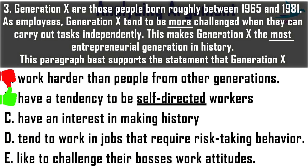Option C: 'Generation X have an interest in making history.' This is an out-of-the-box, heroic statement that does not match any information the paragraph wants to emphasize. Option D: 'Generation X tend to work in jobs that require risk-taking behavior.' Though risk-taking supports an entrepreneurial mindset, it is not as strong as the phrase 'self-directed,' so it does not support as well as Option B. Option E: 'Generation X like to challenge their bosses' work attitude.' The paragraph says they are challenged when carrying out tasks independently, but nowhere does it say they challenge their bosses' attitude. So the right option is Option B.